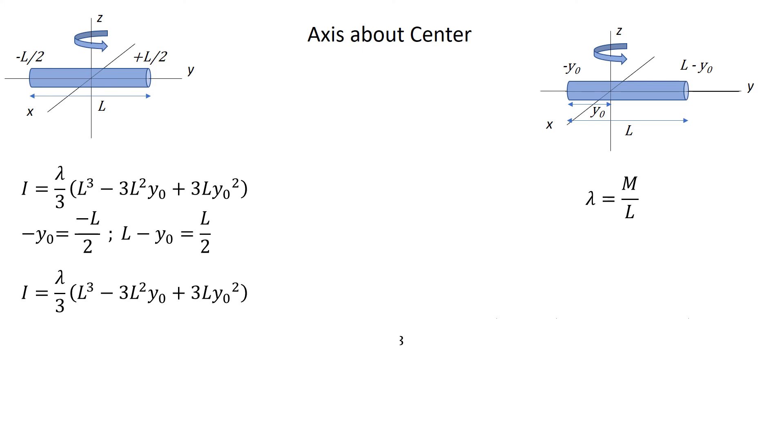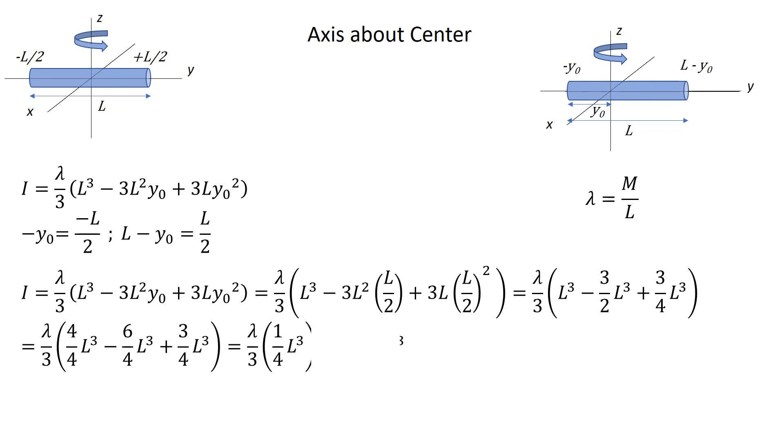So we can plug in those results and square when appropriate. Simplifying that out, we are left with lambda over 3 times L cubed minus 3 halves L cubed plus 3 fourths L cubed. Just to fully do out the math, we'll get a common denominator of 4 such that we can combine all of these terms together.